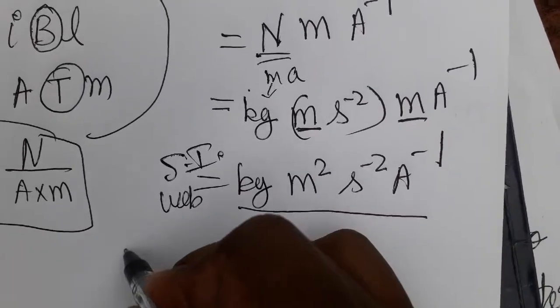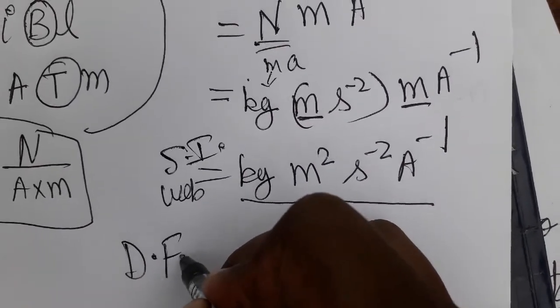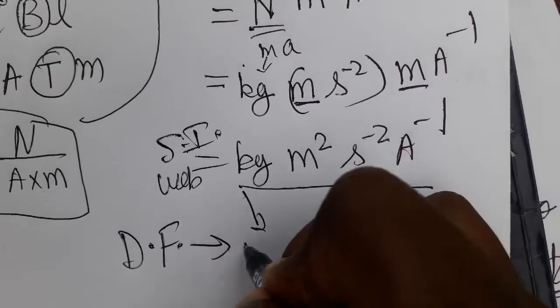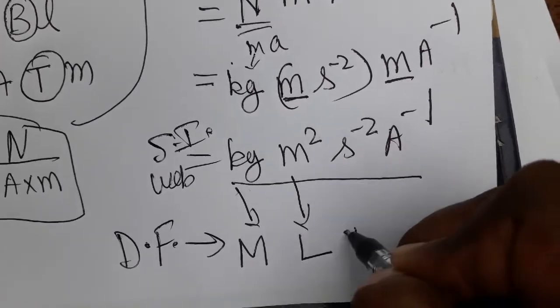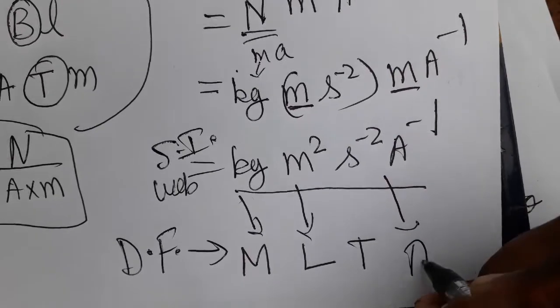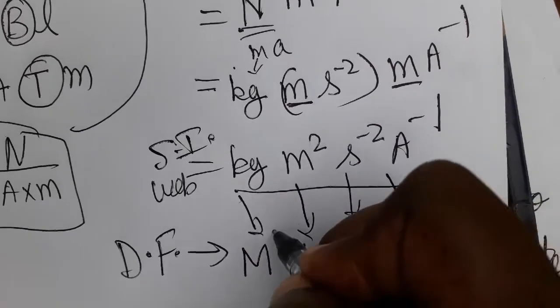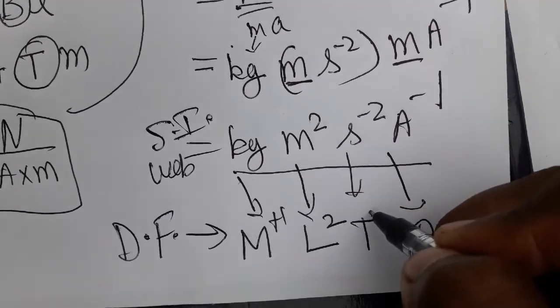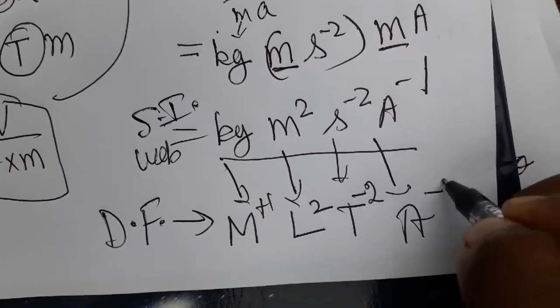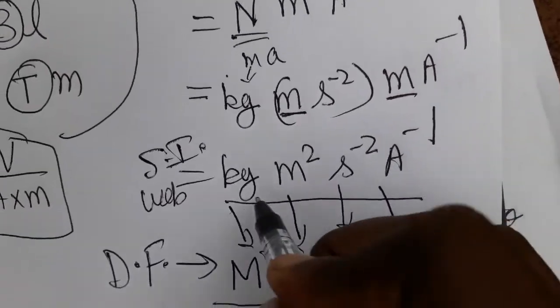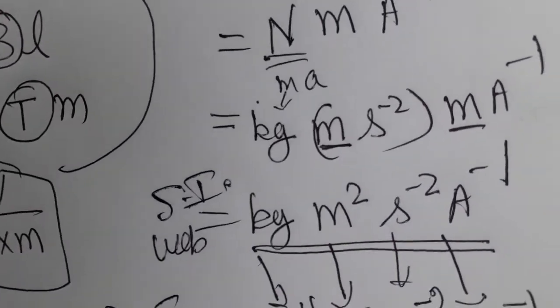Now for the dimensional formula: mass is M, length is L, time is T, current is A. The powers are: M to the plus one, L to the two, T to the minus two, A to the minus one. So we got the dimensional formula and SI unit. Thank you.